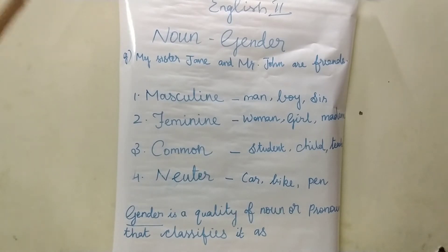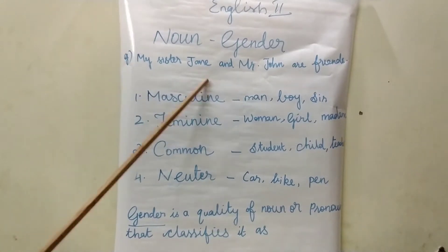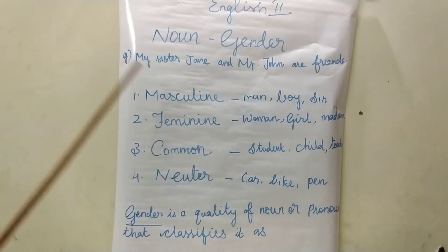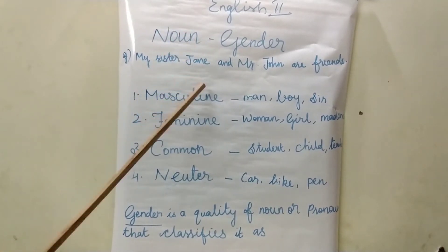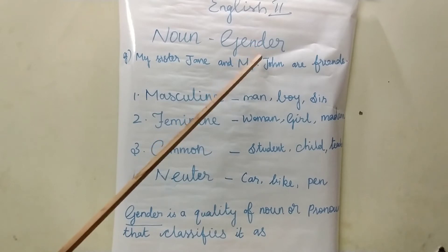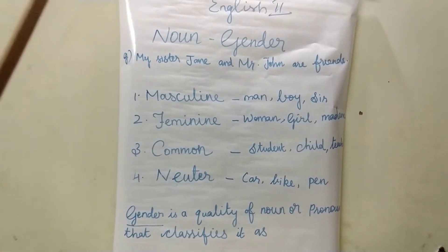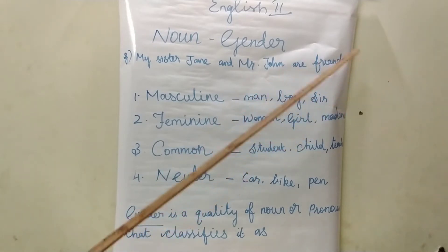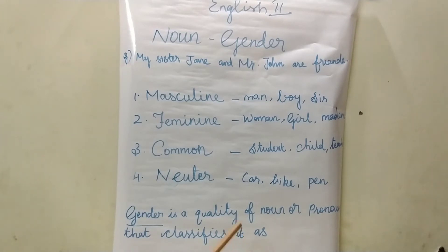What do you mean by gender? Listen to this sentence: 'My sister Jane and Mr. John are friends.' In this sentence, the name Jane refers to a female — feminine gender. Mr. John refers to masculine, male. And 'friends' is common gender — either male or female. A gender is a quality of noun or pronoun that classifies it as masculine, feminine, common, and neuter.